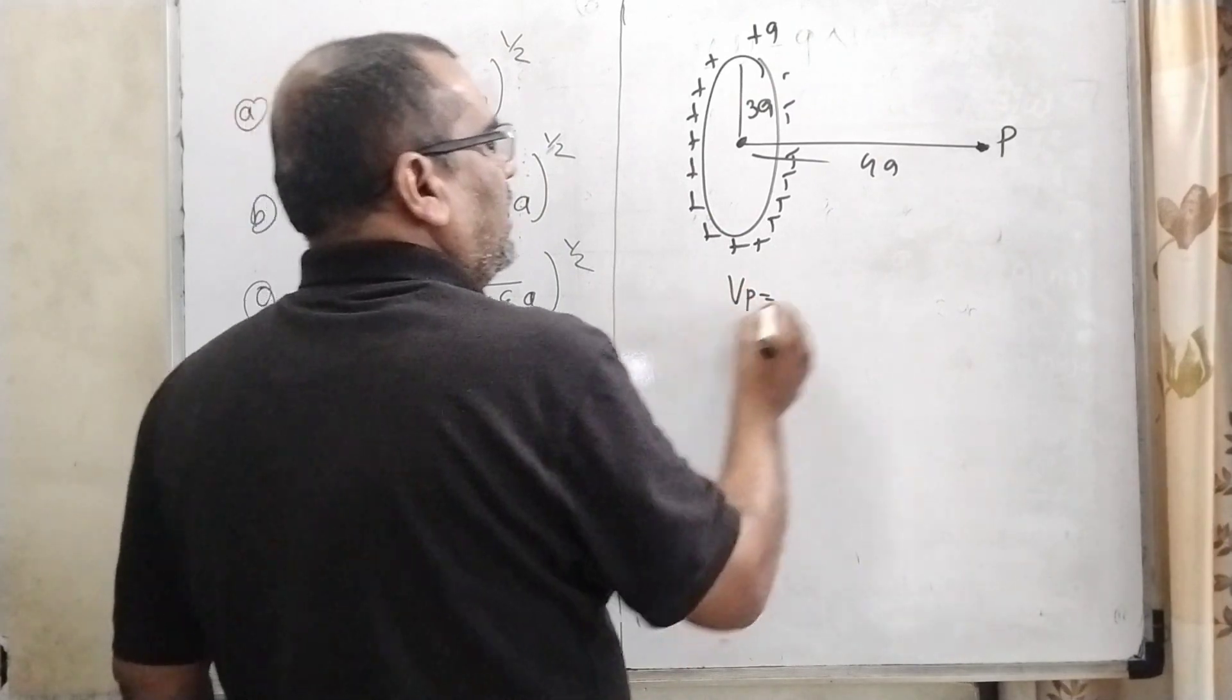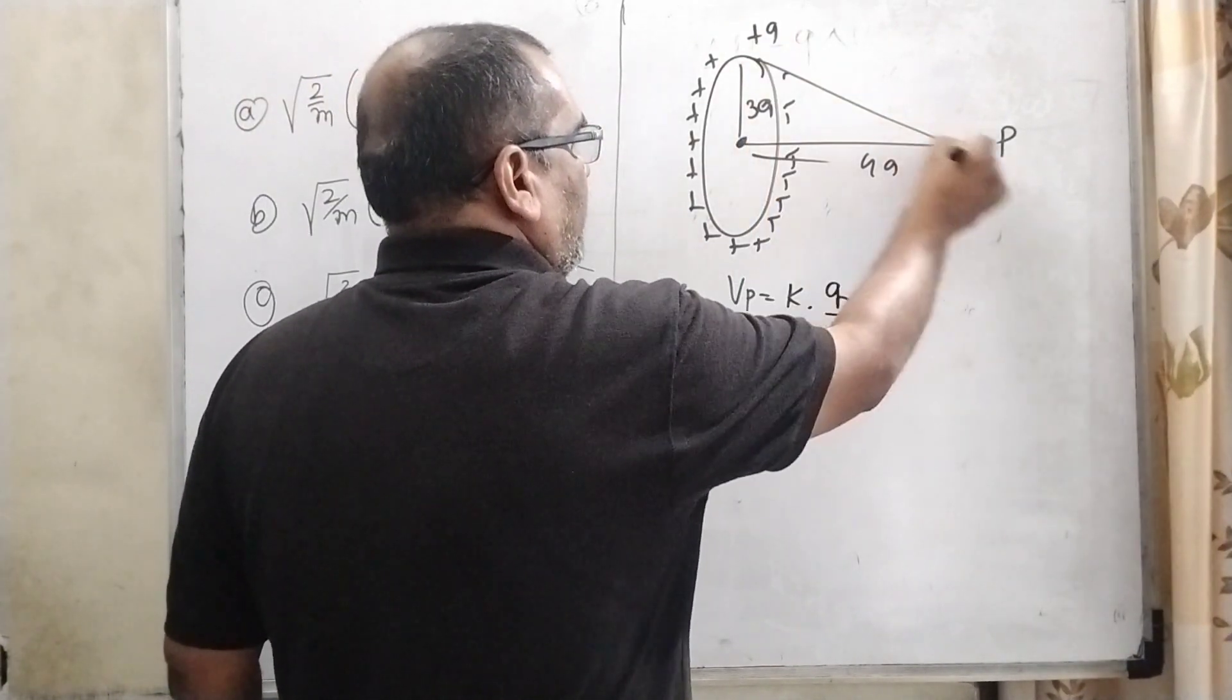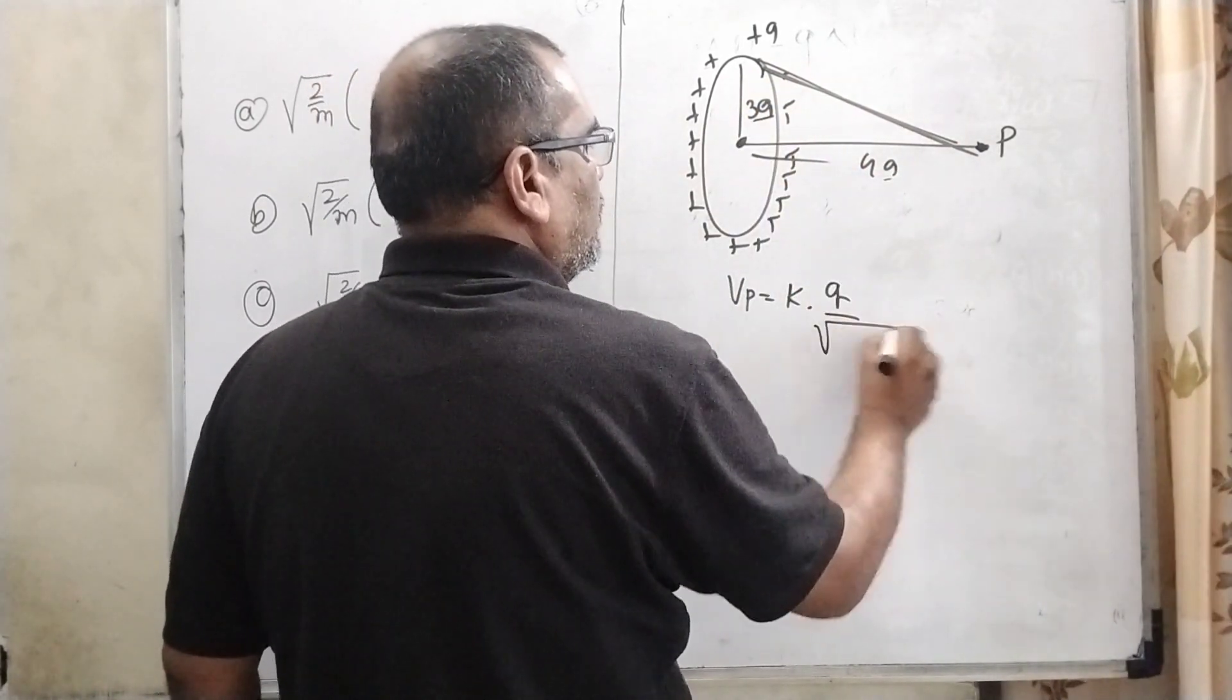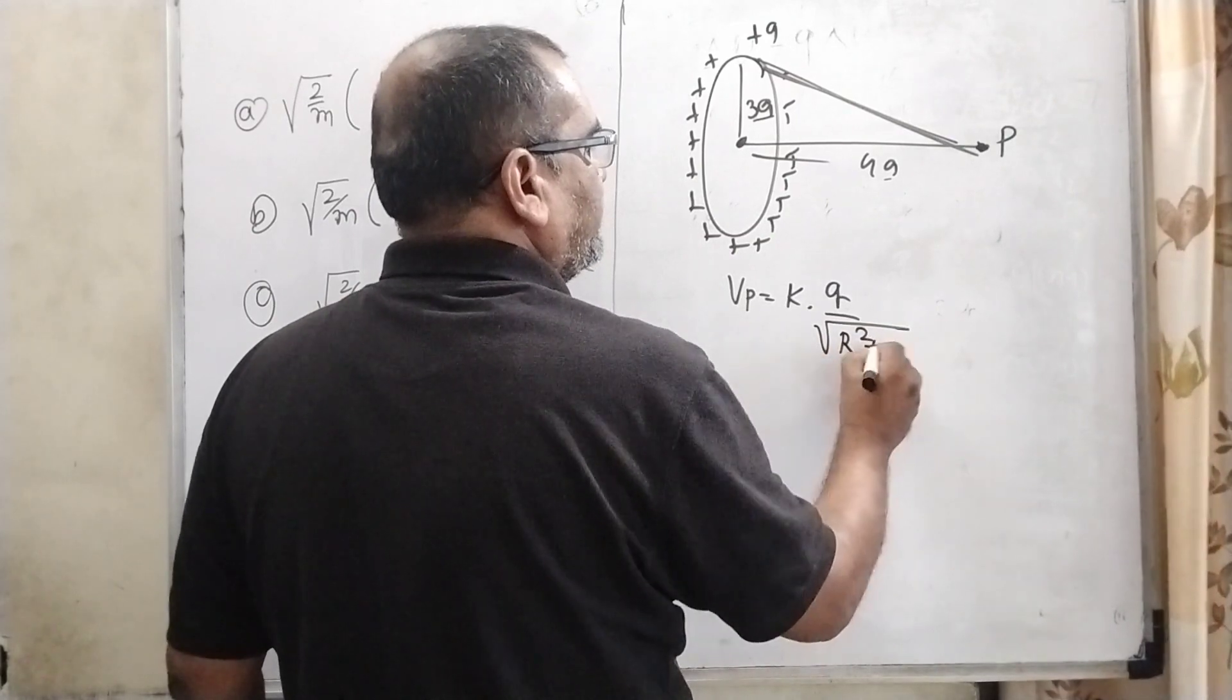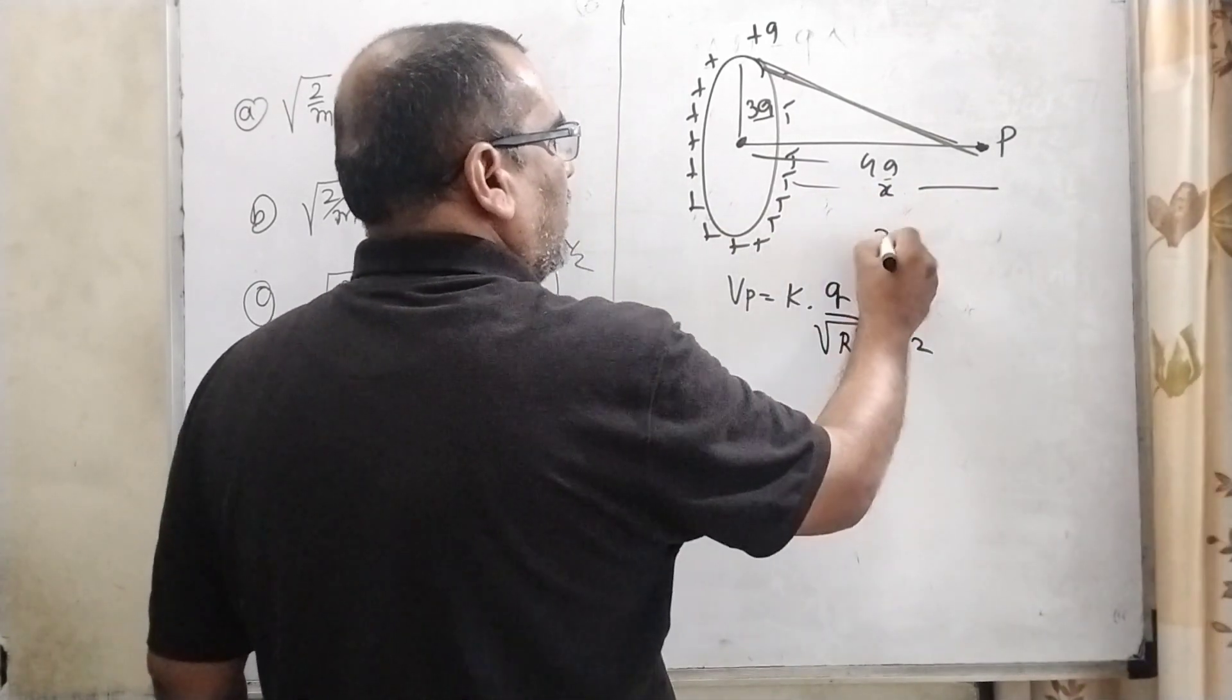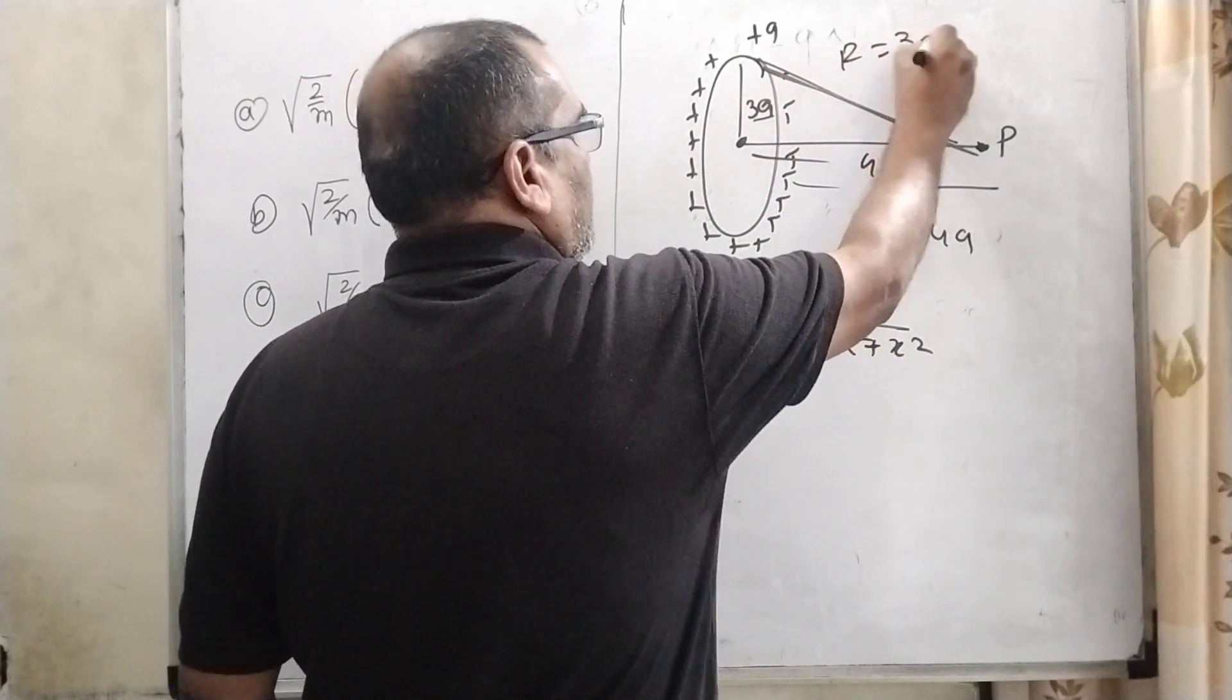Then Vp equal to kq by this distance. Here we have to find out this distance. Here we have given 3a and 4a, it means root r squared plus x squared. And what is x? x equal to 4a. And this is r equal to 3a.